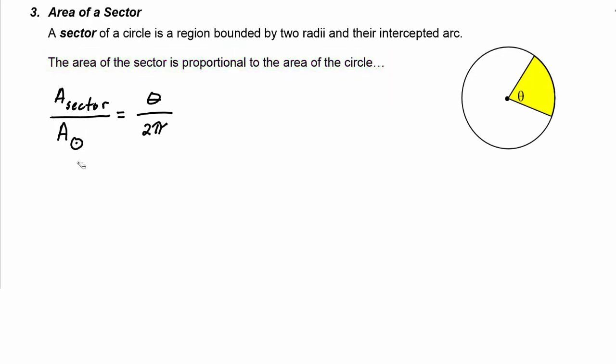If we cross multiply the area of the circle up to the right hand side, then we have that the area of the sector is equal to theta over 2π times the area of the circle. Now we know that the area of a circle is πr².